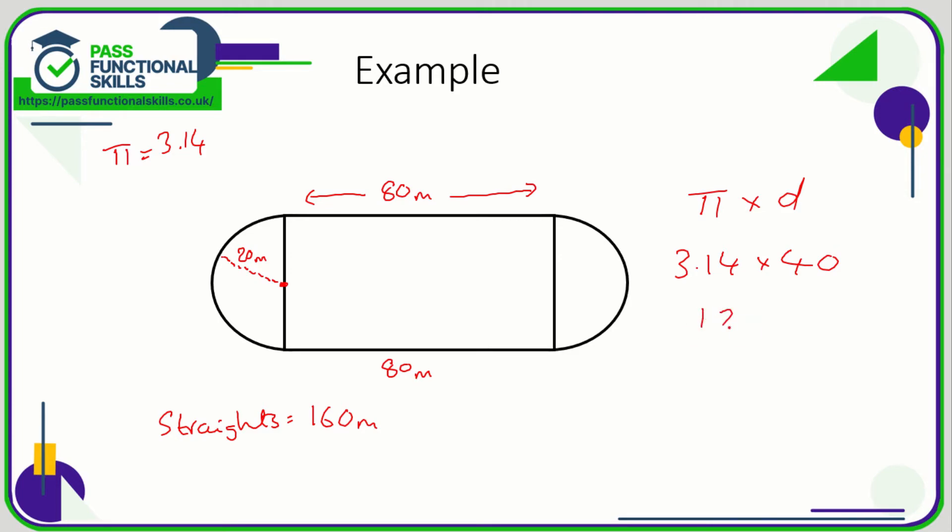So this curved part here plus this curved part here is 125.6. The perimeter of the track is simply going to be our 160 plus the 125.6, and that comes to a grand total of 285.6 meters.